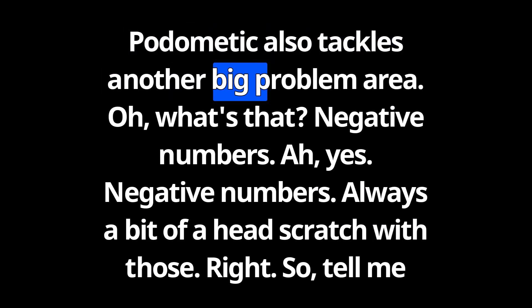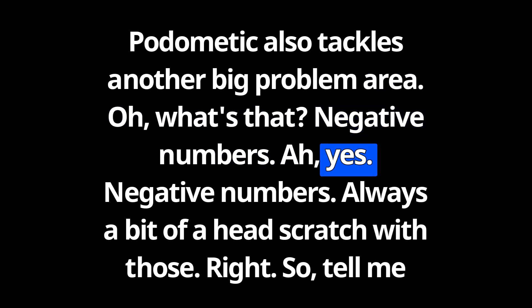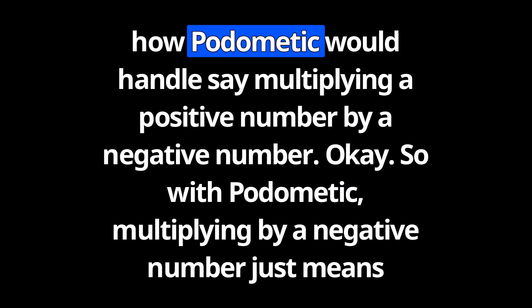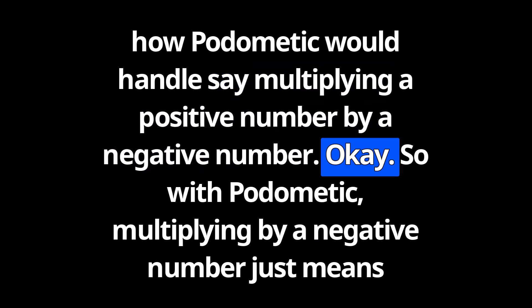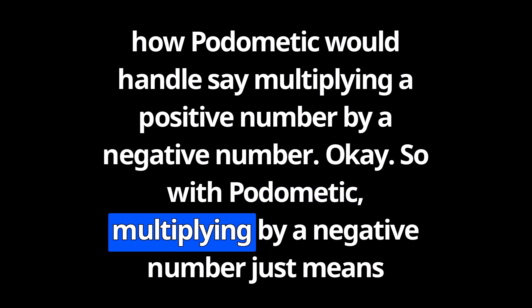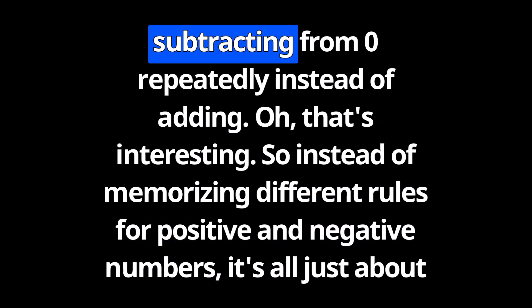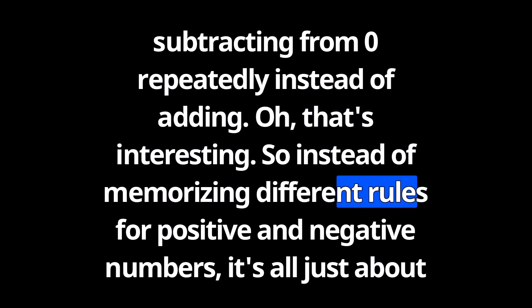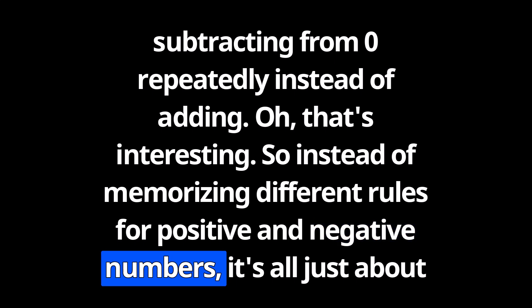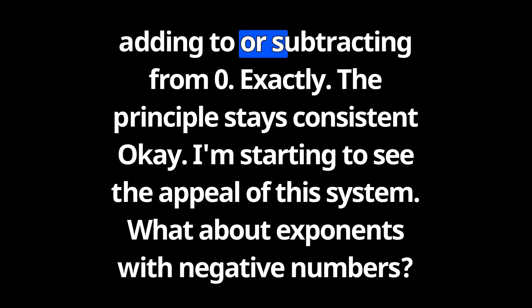But it doesn't just stop there. Podomedic also tackles another big problem area — negative numbers. Tell me how Podomedic would handle multiplying a positive number by a negative number. With Podomedic, multiplying by a negative number just means subtracting from zero repeatedly instead of adding. So instead of memorizing different rules for positive and negative numbers, it's all just about adding to or subtracting from zero. The principle stays consistent.